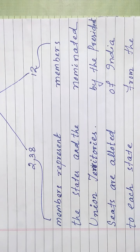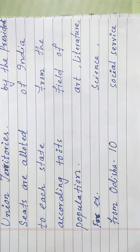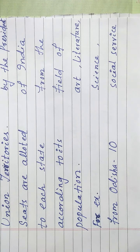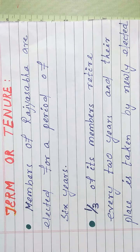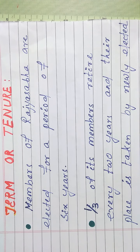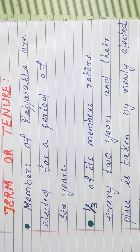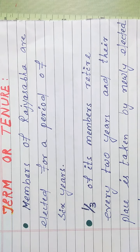And 12 members are nominated by the President of India from the field of Art, Literature, Science, and Social Service. The members of Rajya Sabha are elected for a period of 6 years. One third of its members retire every 2 years and their place is taken by newly elected members.